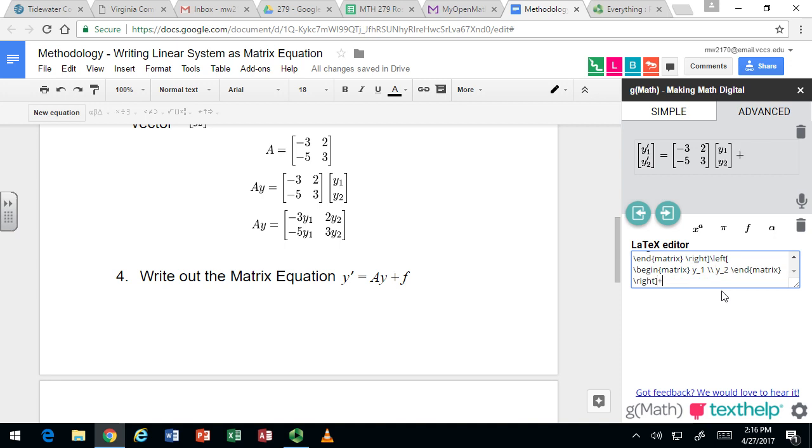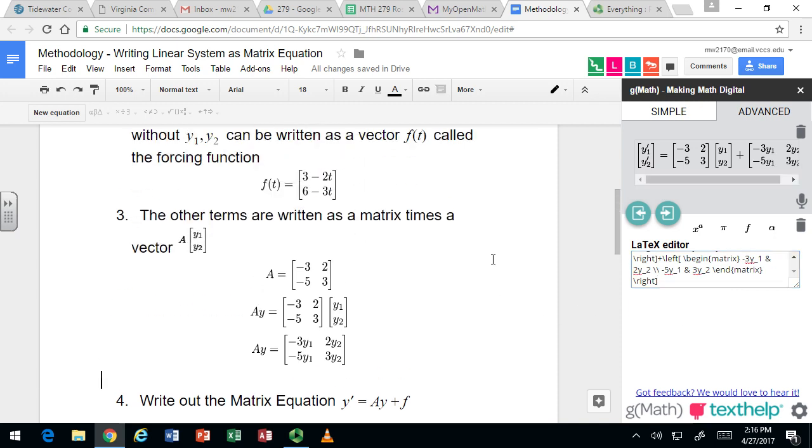And then lastly, we have F, which is right there. 3 minus 2T, 6 minus 3T.